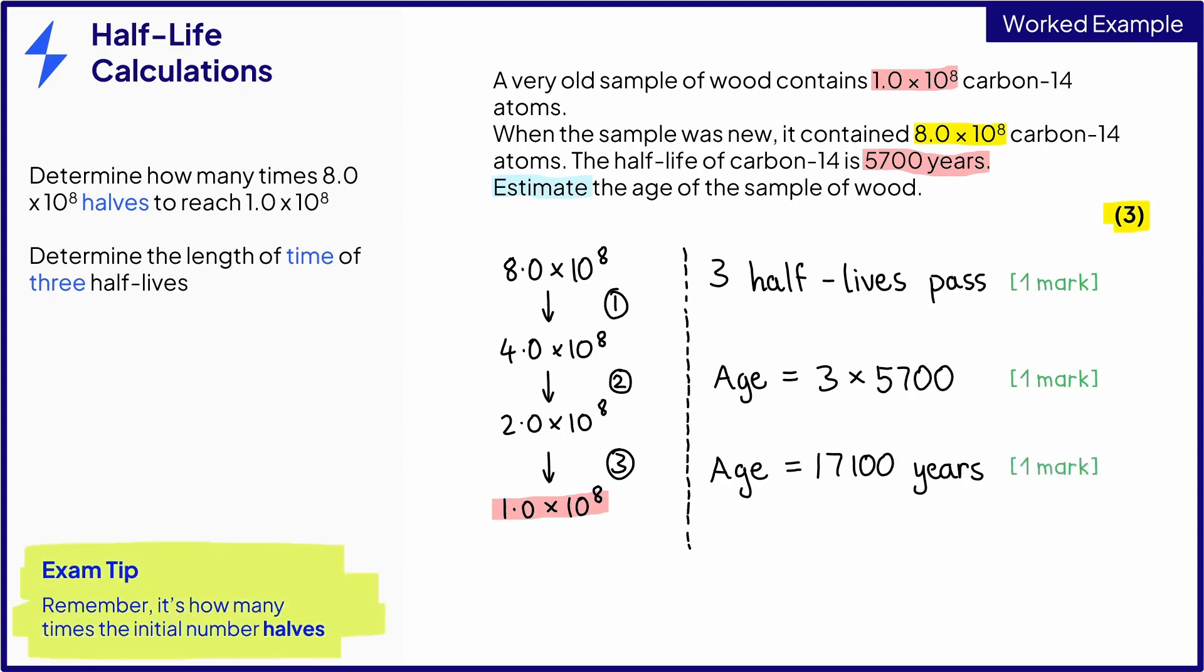With questions like these, a common error is to think that eight half-lives have passed, because that's how many times the final number of nuclei fits in the initial number. But you need to remember that we are halving the number of nuclei each time. The clue is in the name, half-life.